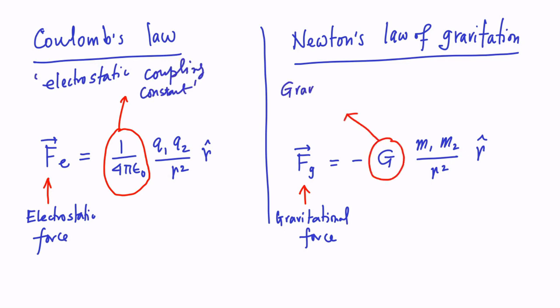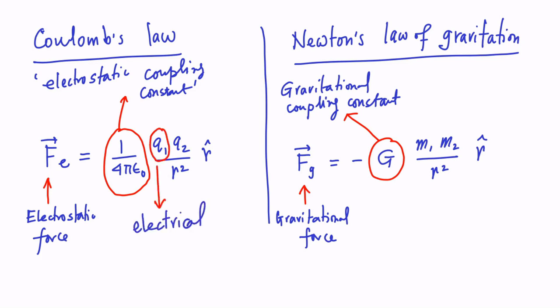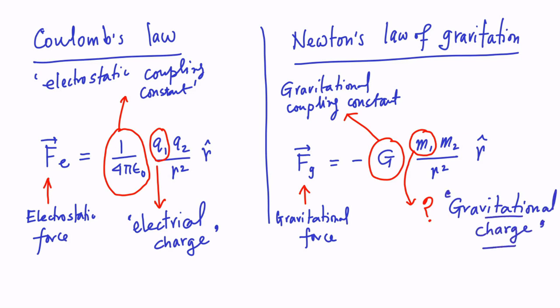Similarly, the term capital G is known as the gravitational constant, or Newton's constant of gravitation, which is also the gravitational coupling constant. The coupling constant means that if the value of this constant were zero, two masses would not gravitationally attract each other — the same applies for the electrostatic coupling constant. Now you can ask: what are the terms m1 and m2 that appear in Newton's law of gravitation? Comparing with Coulomb's law, we conclude that m1 and m2 represent the so-called gravitational charge of these two particles.